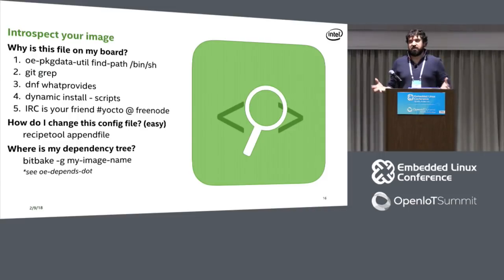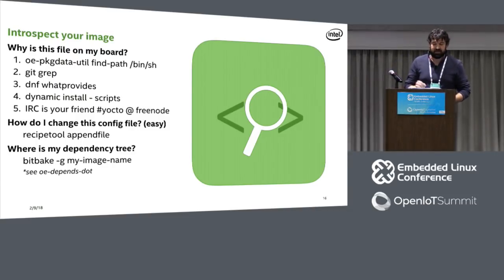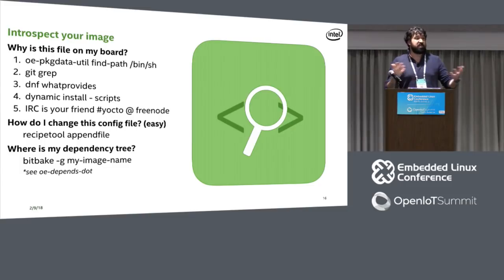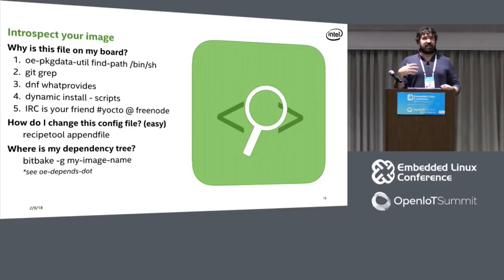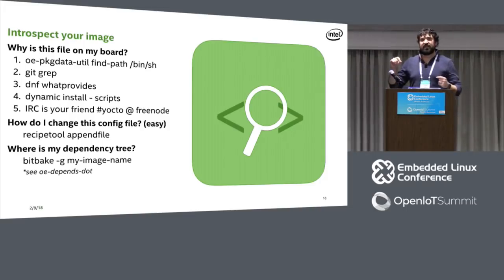A common question I get from customers is: I just built my file system, booted my board, there's a file on here — why is it there? I didn't put it there. The first utility I go to is oe-pkgdata-util. A lot of people don't know this. It's going to output the name of the recipe that caused that file to populate on the board. I point it at /bin/sh and in a simple core-image-minimal build it'll say busybox. You can point it at any file and it'll do its best to introspect your build. This is what I do before I git grep, because git grep is the natural thing when you're looking for how something got in there.